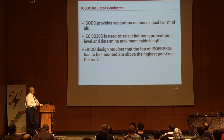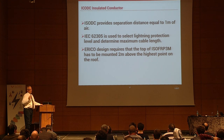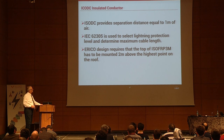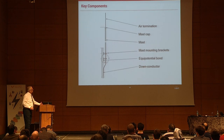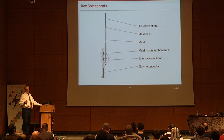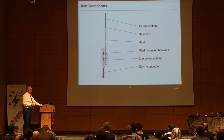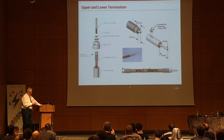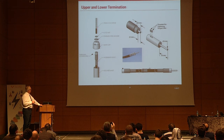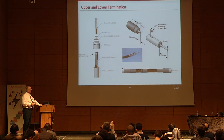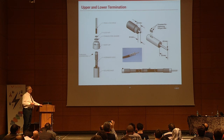Some highlights: the terminal must be placed at least two meters above the highest point on the structure. This is the full system — not just the cable — it includes a mast, upper and lower terminations. The rod couples into the cable itself, and the lower termination connects to the grounding system. We have third-party certification for the system.